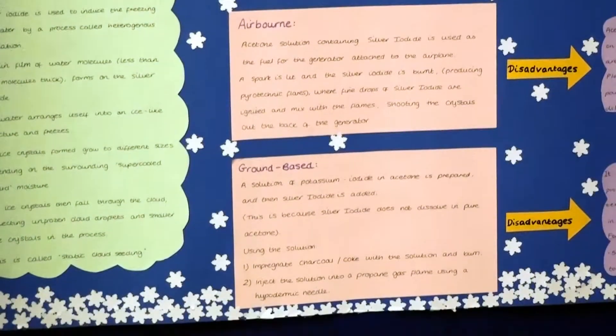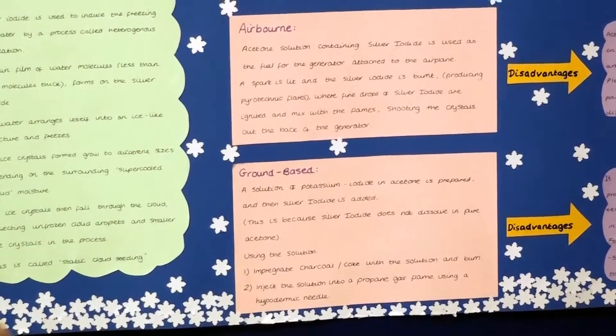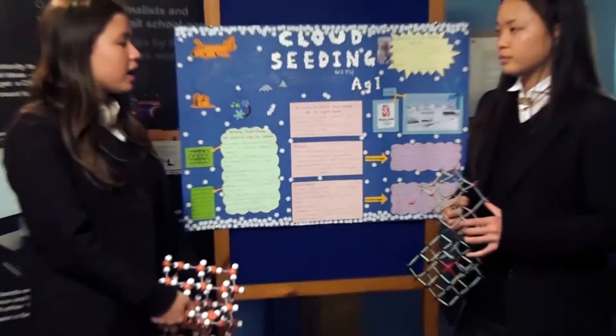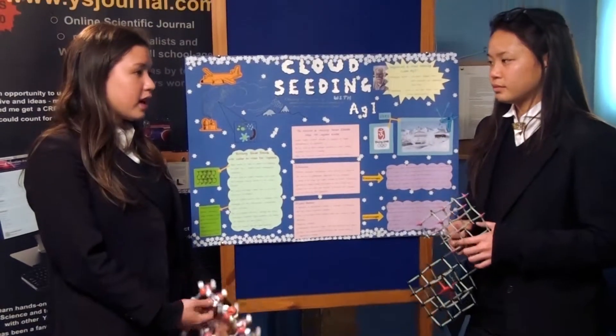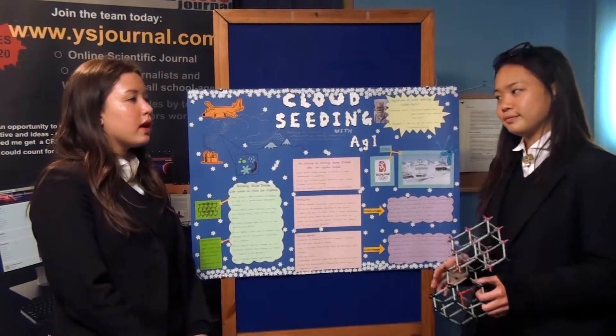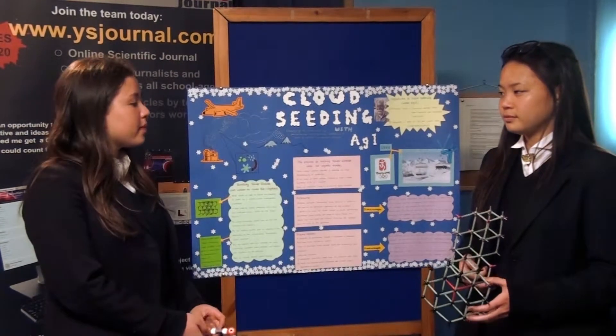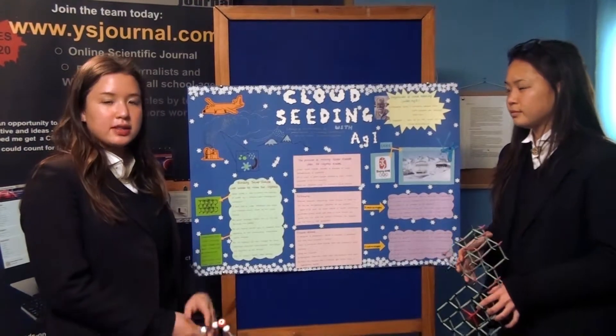With ground-based generators, using the same potassium iodide acetone solution, you can either impregnate it into charcoal or coke and then burn it, or use a hypodermic needle and put it in a propane gas flame. Potassium iodide acetone solution is used because silver iodide cannot dissolve in pure acetone alone.